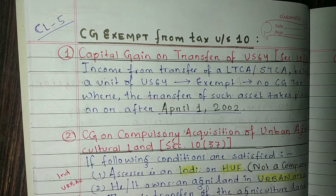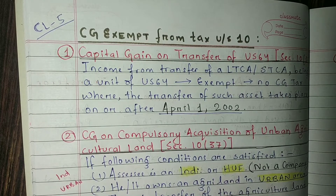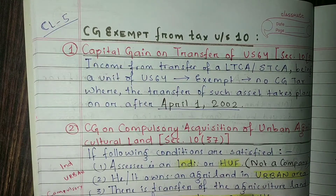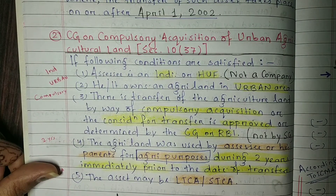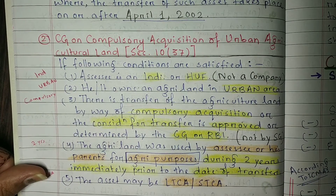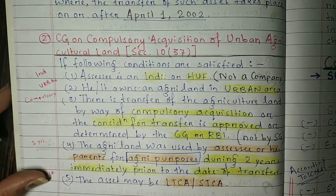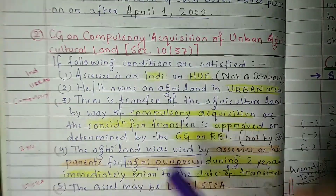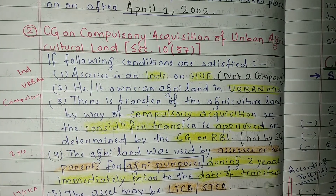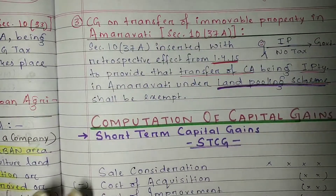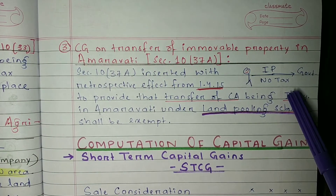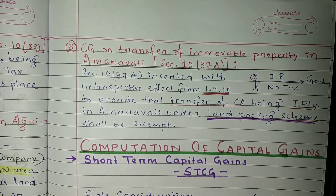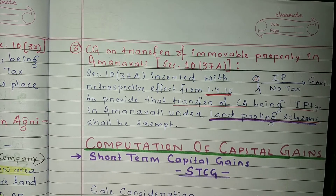To summarize: first is the US 64 case — if you transfer US 64 units after 1st April 2002, capital gains tax is exempt. Second: if you personally own urban agricultural land and have been farming it for two years, and the central government or RBI compulsorily acquires it, then capital gains tax is not payable. Third: if you have an immovable property in Amravati and give it to the government, the capital gain on the consideration received is also exempt.